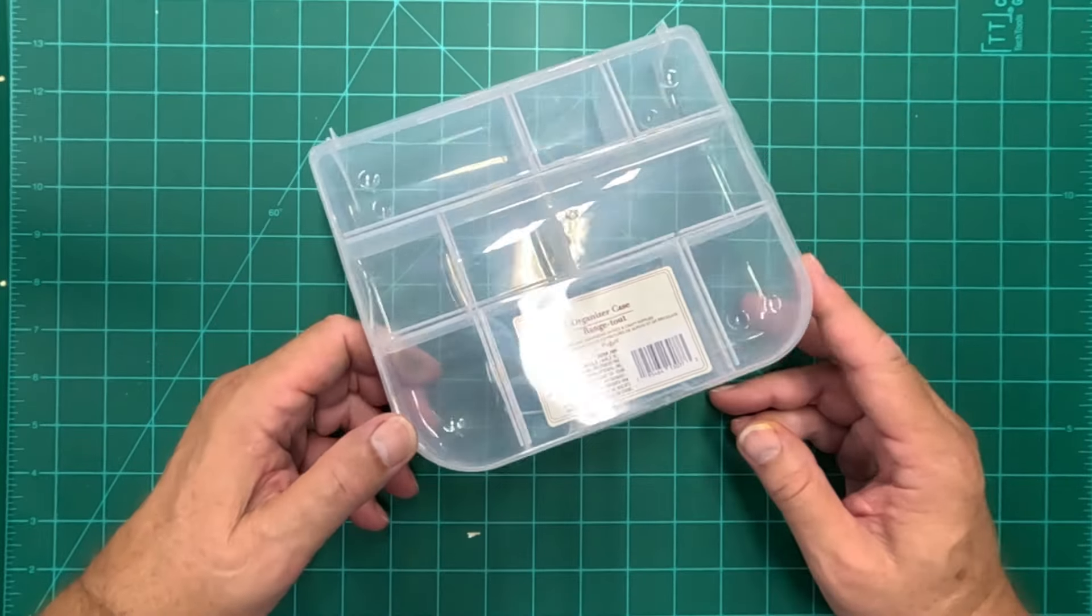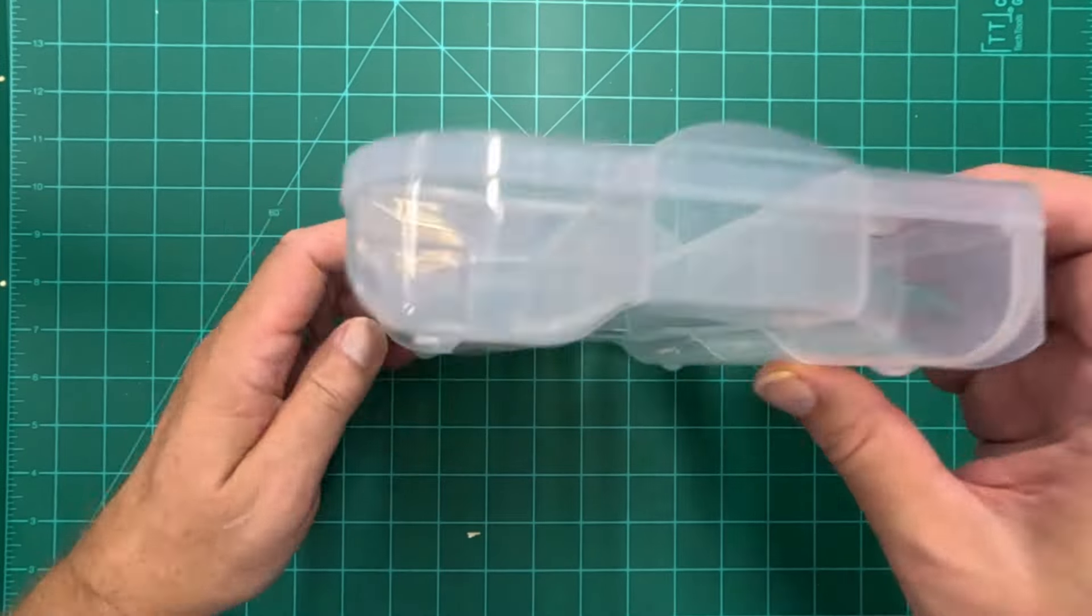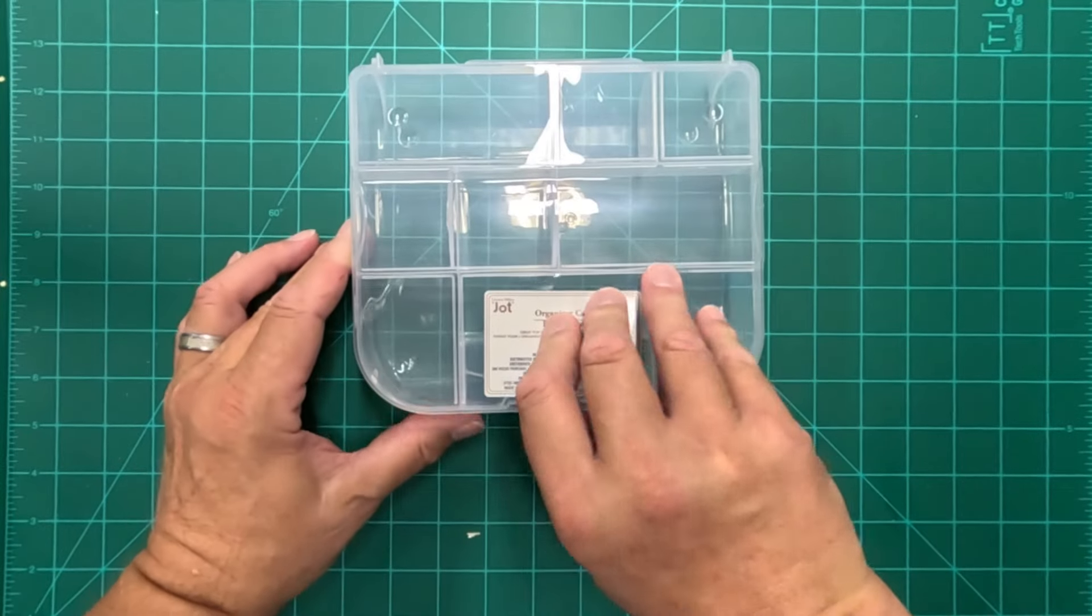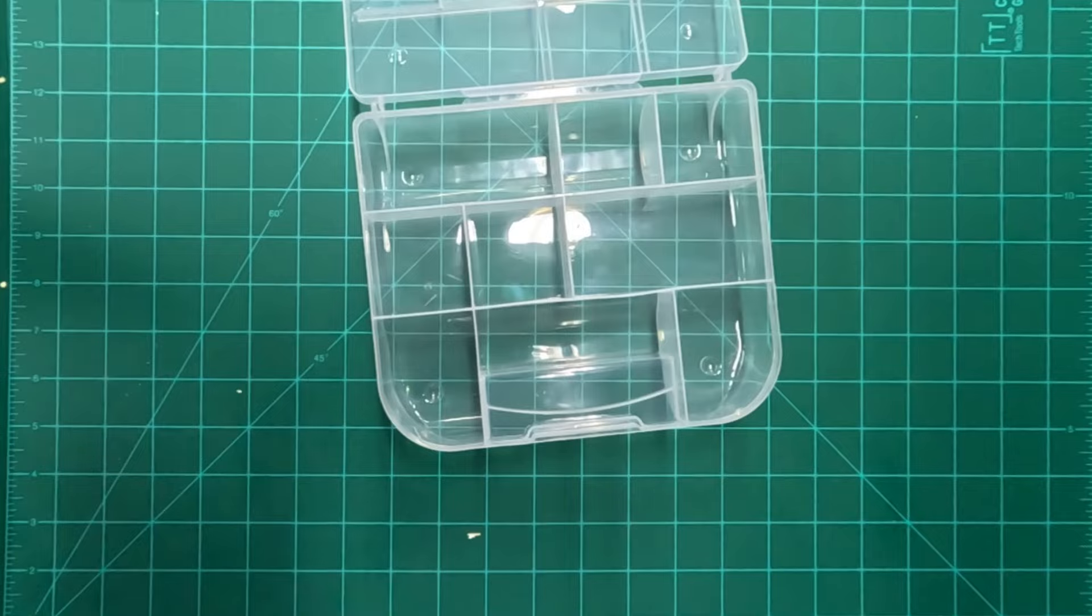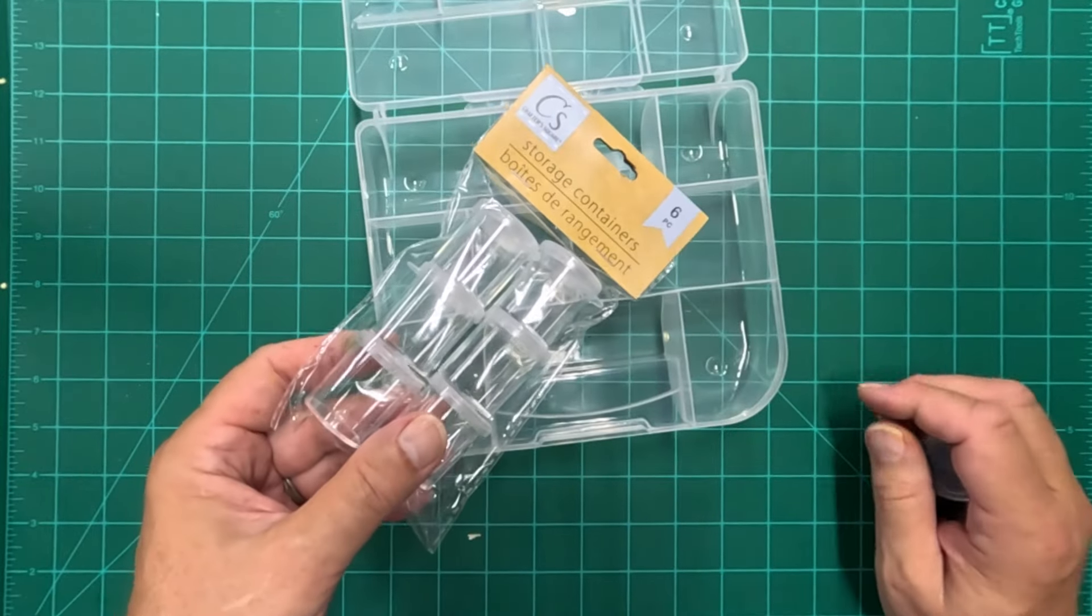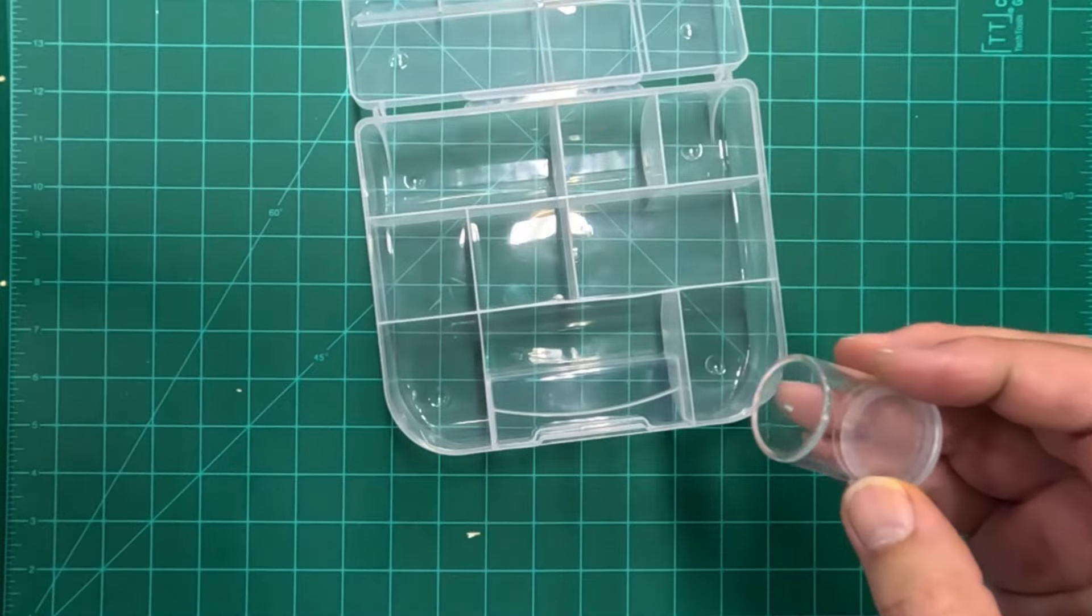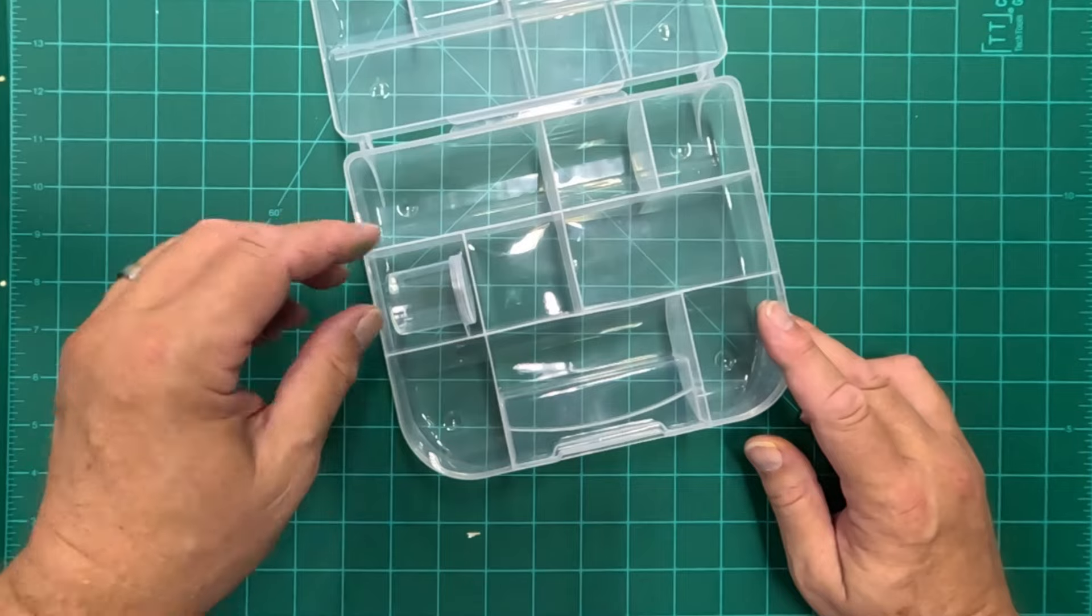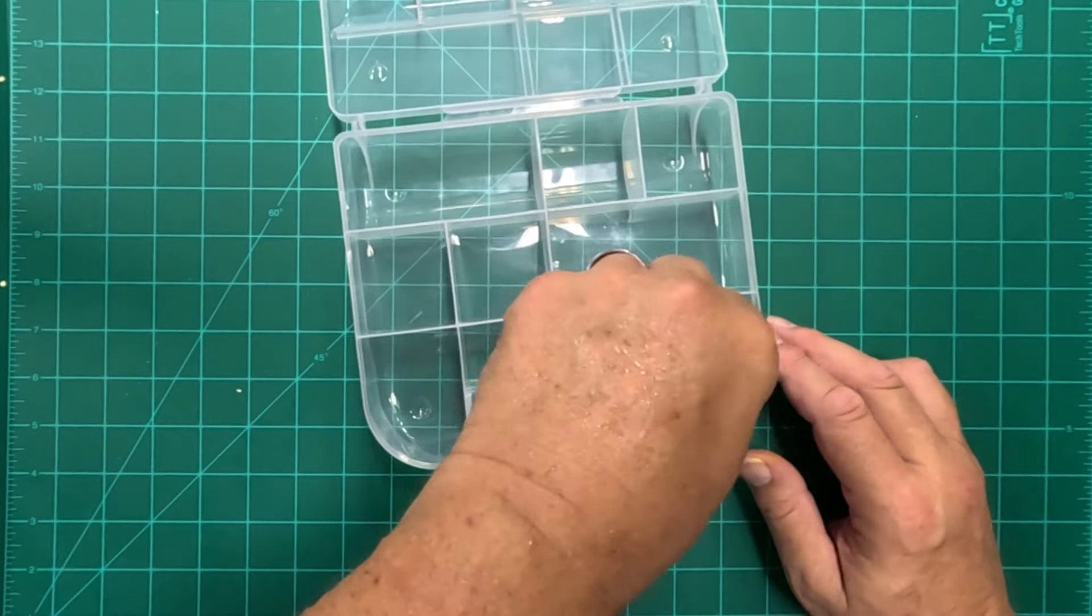Hack number three. Found this at the Dollar Tree. It's an organizer case, but it's not like the ones that I've been seeing lately. This has rounded compartments. If you remember a video or two ago, I come up with these. These are called storage containers, but they're little round containers, and what I thought was neat is they're going to fit nicely in those storage compartments in this box because they're rounded.